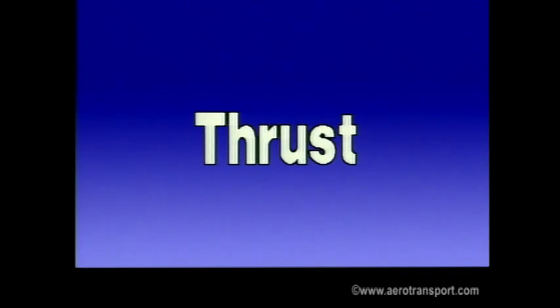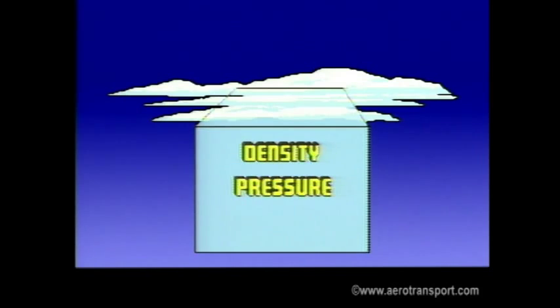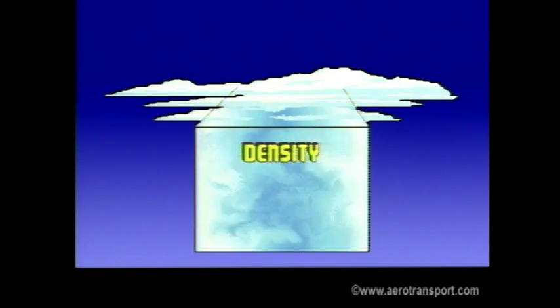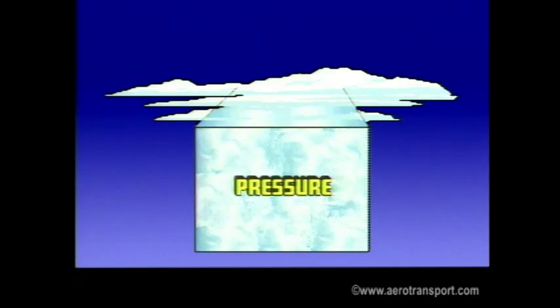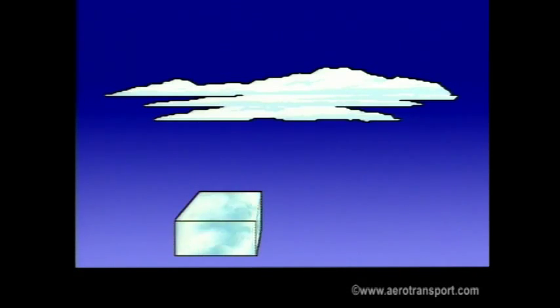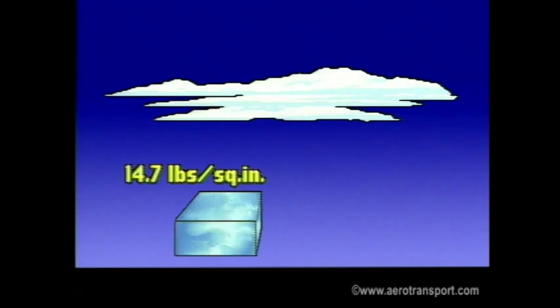We will first consider the atmosphere and changes in its properties that affect flight. Two properties we concern ourselves with are density and pressure. Density refers to the mass or weight of the air in a given volume. Changes in that density are measured as air pressure. At sea level, air pressure averages about 14.7 pounds per square inch.